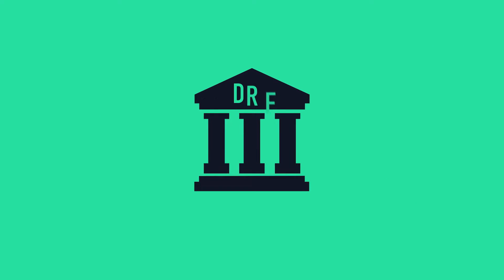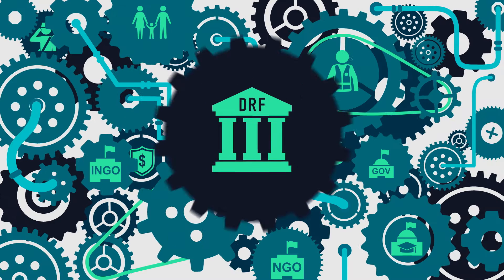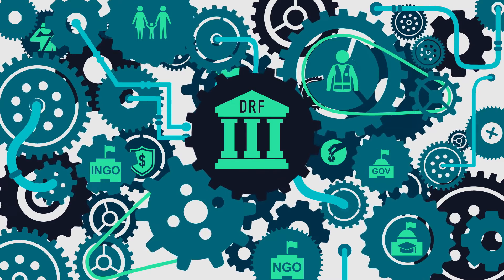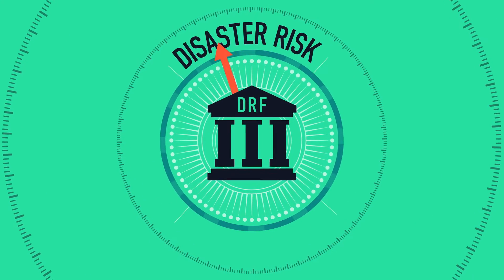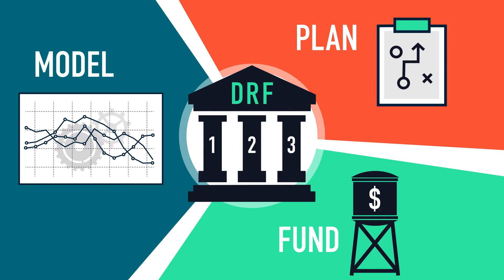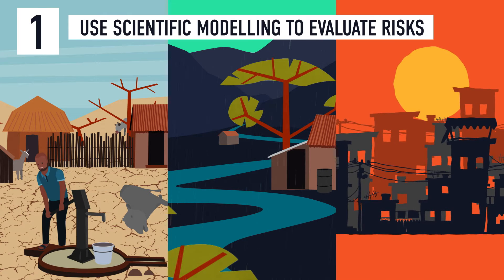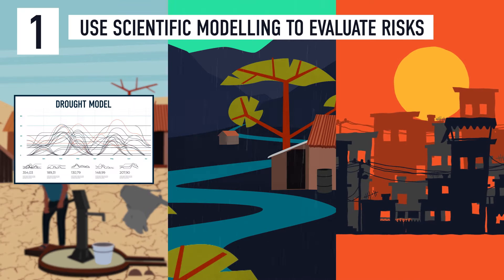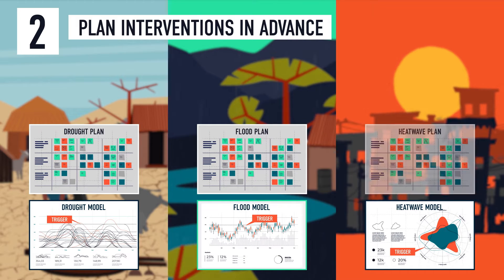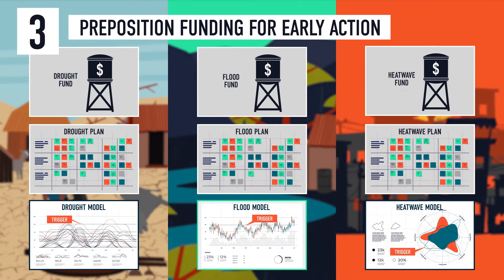Disaster Risk Financing has great potential to improve the humanitarian system. DRF enables us to proactively manage disaster risk and it's based on three key principles: understand the risks and hazards faced in different countries and use scientific models to quantify these risks and agree triggers or danger thresholds; plan interventions in advance of disasters; and pre-position funding so action can occur in anticipation of a crisis.